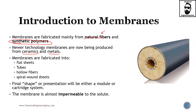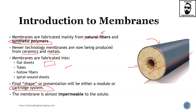Membranes are fabricated in different shapes. The most common ones are flat sheets — like a normal filter — tubes, hollow fibers, and spiral-wound sheets. It's very important to consider that the final shape or presentation will be either a module or cartridge. As you can see here, there are many hollow fibers — possibly thousands — each one carrying out the membrane process. As engineers, we treat this as a single unit, called the cartridge system, which is very common in membrane technology.